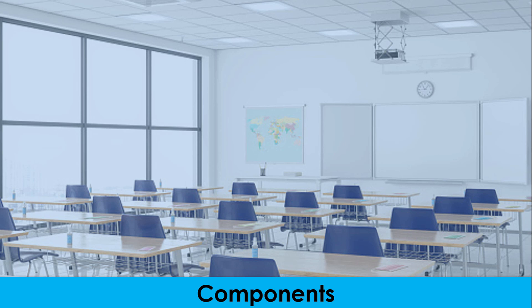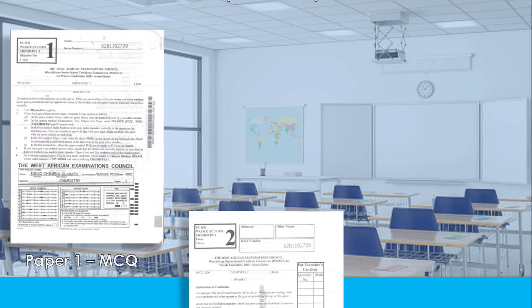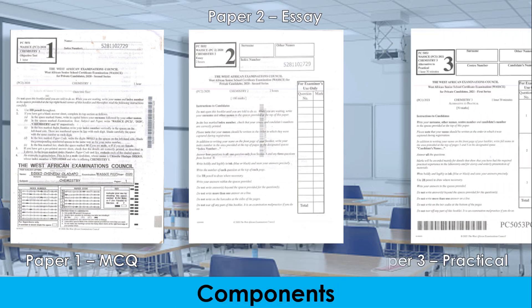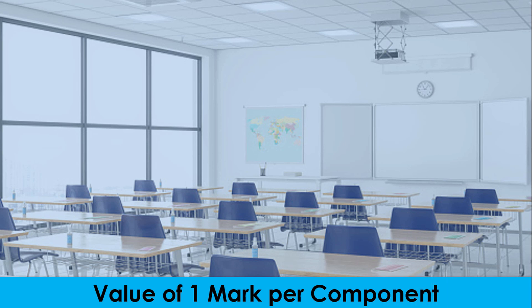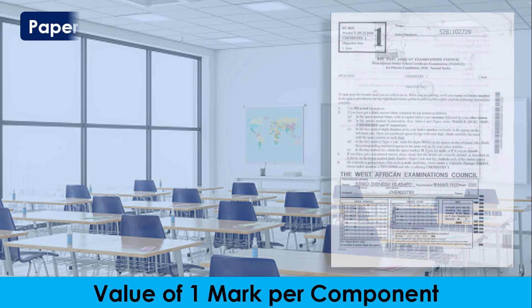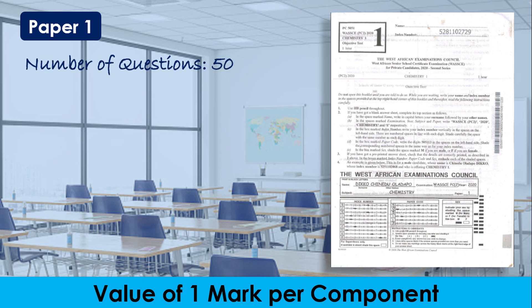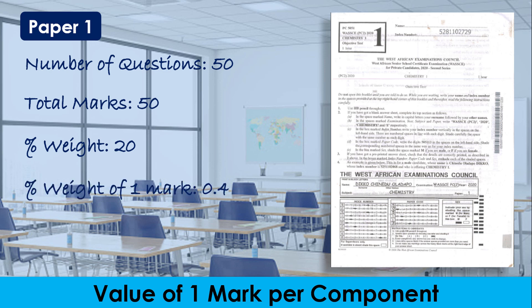The WAEC chemistry exam, just like other school science subjects, is made up of three components: Paper 1, which is the objective test or multiple choice questions; Paper 2, the essay; and Paper 3, the practical test. The objective test contains 50 questions worth 50 marks total, so each question is worth one mark, contributing a weight of about 20% to the overall score — meaning each correct answer has a weight of about 0.4 (obtained by dividing 20 by 50).